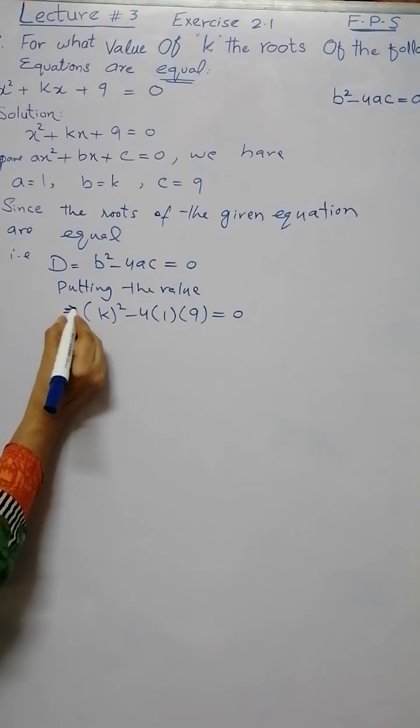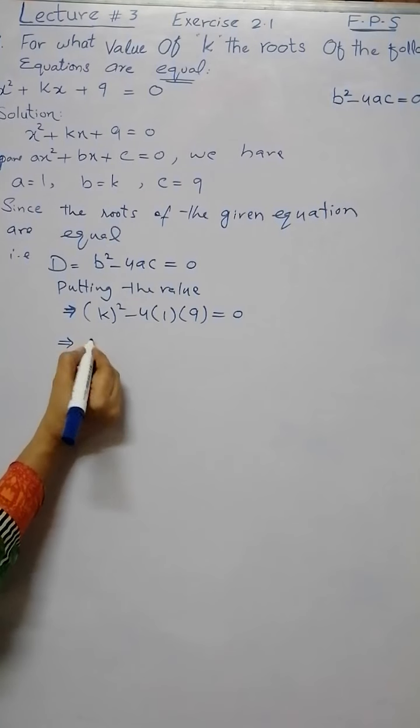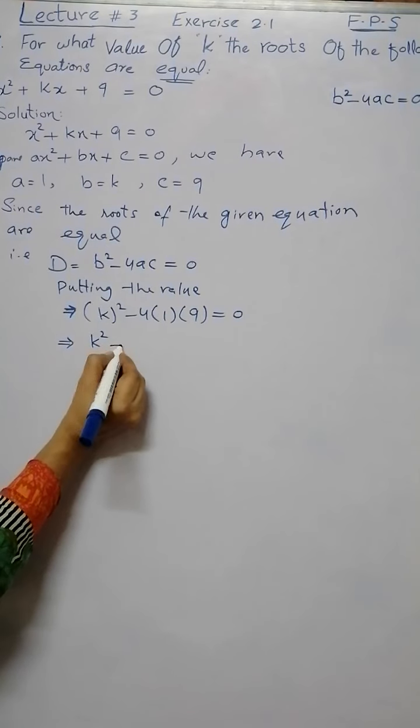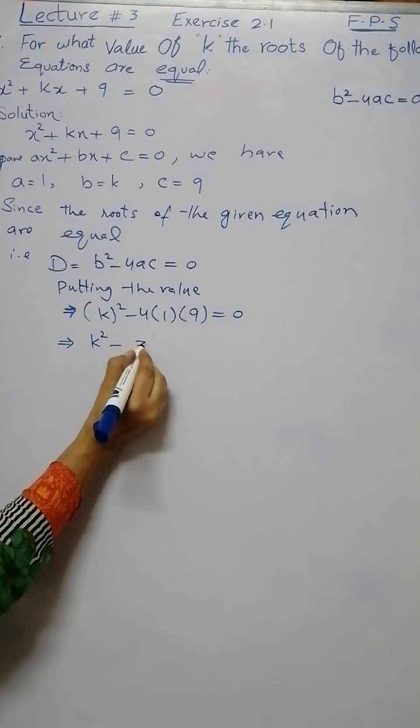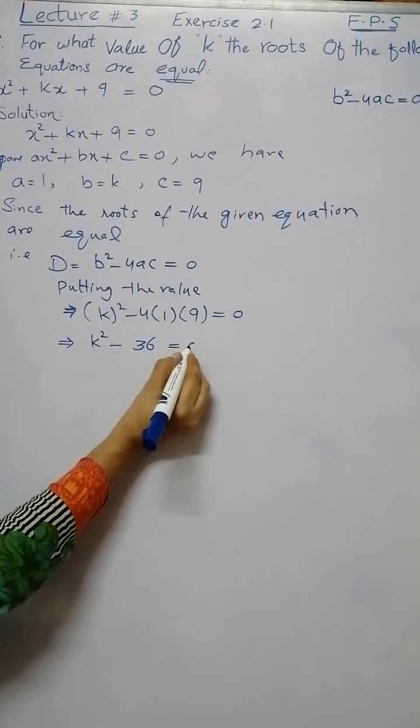This implies k² minus 36 equals zero. Here k squared, 4 times 9 is 36, equals to zero, so k² - 36 = 0.